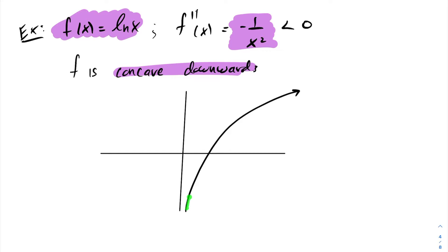Visually looking at the function, you can see this is your ln of x function. As I move along the curve, we see that the slopes of the tangent equations are decreasing throughout. And because of that, it is concave downwards.